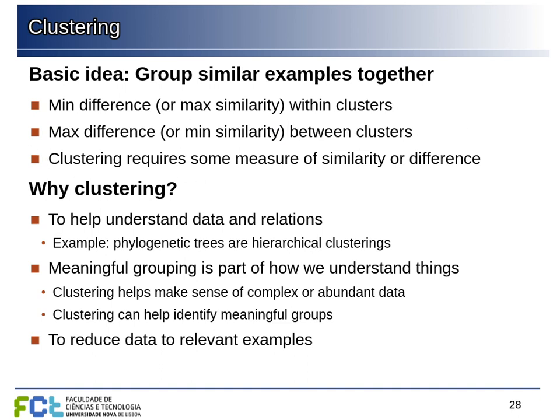Clustering always requires some measure of similarity or difference. The reason for doing this is to help understand data and relations between different examples. Phylogenetic trees are one example of clustering — in this case hierarchical clustering — and it's very useful to understand how different elements relate to each other. Grouping things together is one way we make sense of complex data and large datasets, identify relations, and reduce data to relevant examples — using only representatives of different groups.